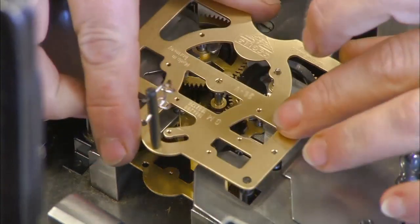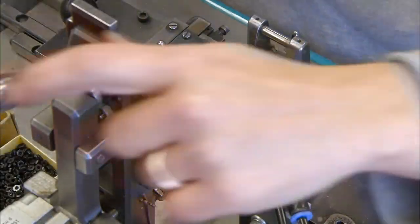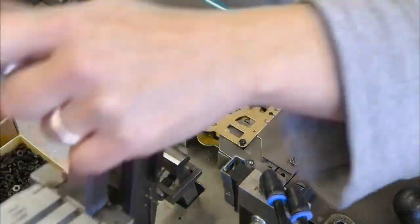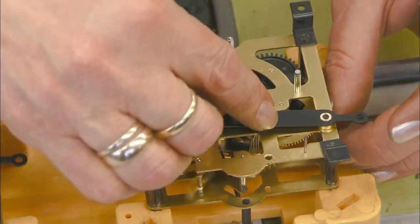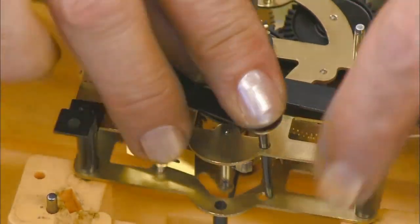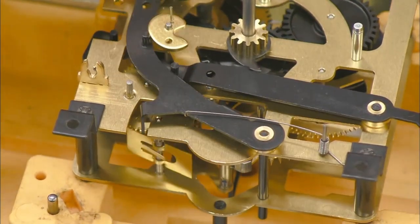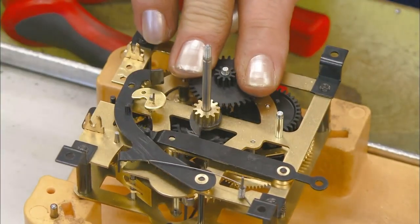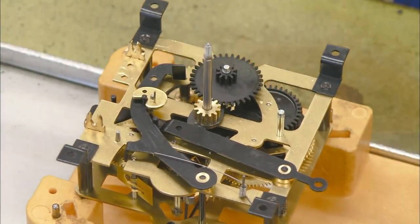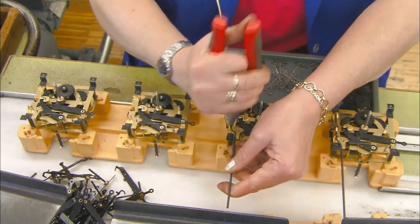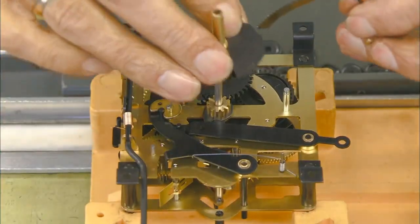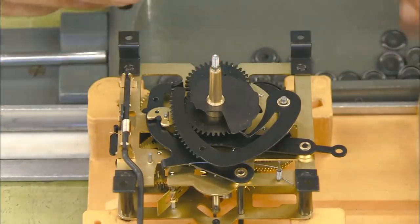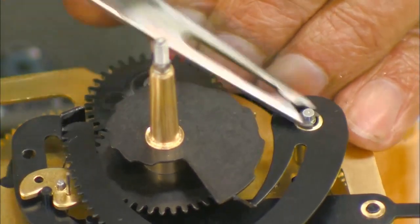Workers sandwich the movement between two brass plates, connecting them at the corners with long screws. Then on the outside, they install the mechanism that times the chime. Next, the steel wire on which the cuckoo bird will perch. Then last but not least, the reels that will move the clock hands.